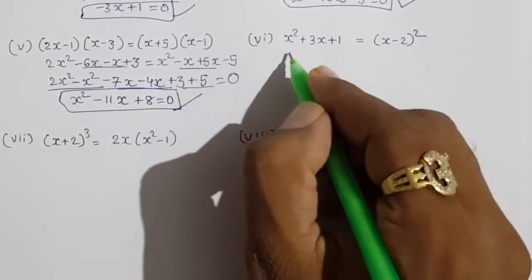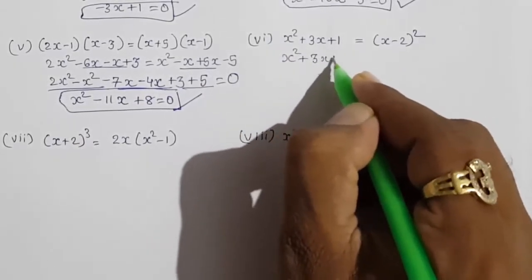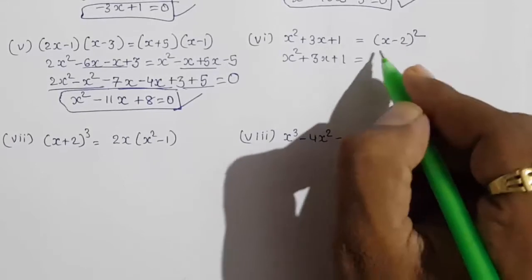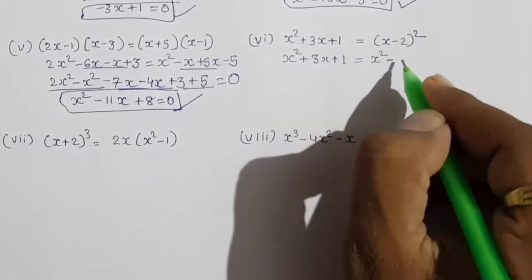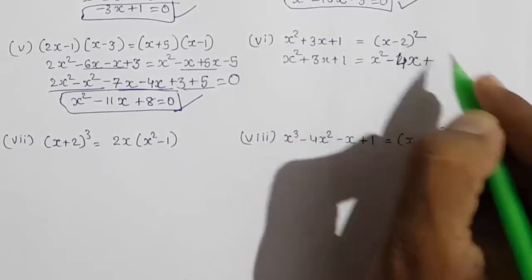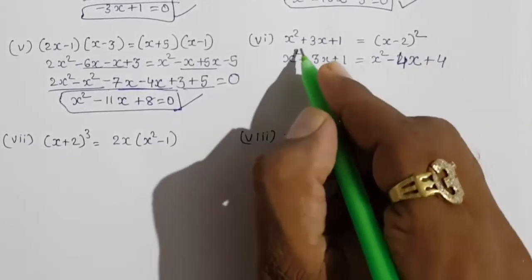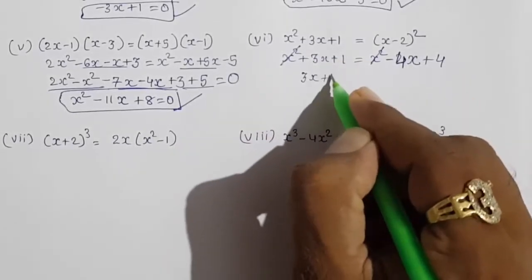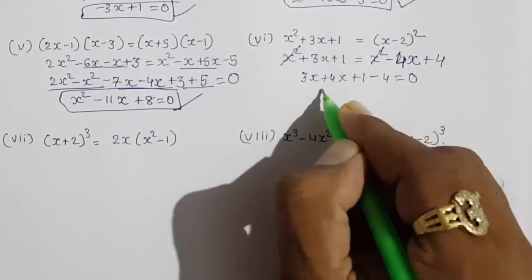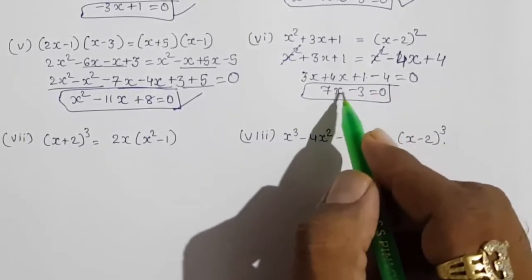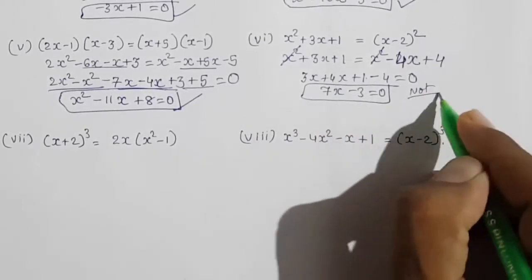Moving towards the sixth question. Here they have already given the numbers, so we use the identity (a minus b)² = a² minus 2ab plus b². So a² means x², minus 2 into first term into last term = 2 into 2 = 4x, plus 2² = 4. Taking all numbers to one side: x² minus x² gets cancelled. So 3x, this will come here, 4x plus 1 minus 4 = 0, giving 7x minus 3 = 0. The highest power is not 2, so this is not forming a quadratic equation.